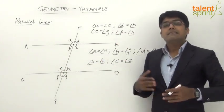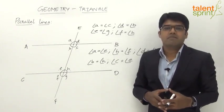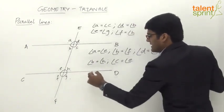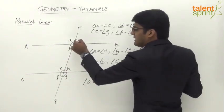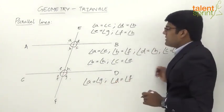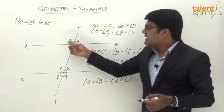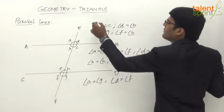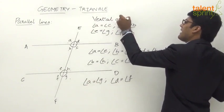For exterior alternate angles: angle A equals angle G, and angle D equals angle F. These are the exterior alternate angle pairs, on opposite sides of the transversal and outside the two parallel lines.